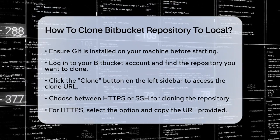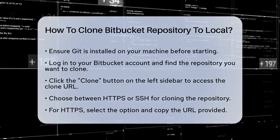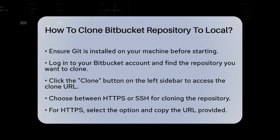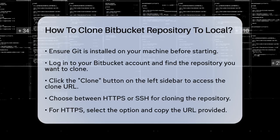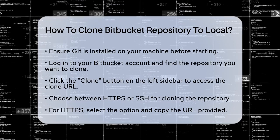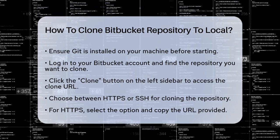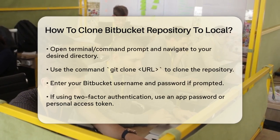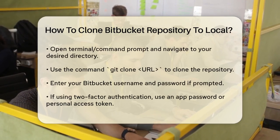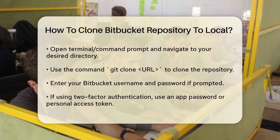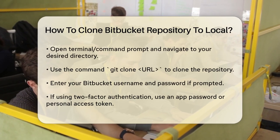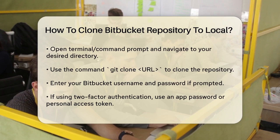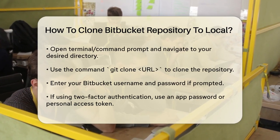Using HTTPS: To clone using HTTPS, select the HTTPS option from the drop-down menu and copy the provided URL. It will look something like: https://username@bitbucket.org/TeamSense/documentation-tests.git. Open your terminal or command prompt and navigate to the directory where you want to clone the repository.